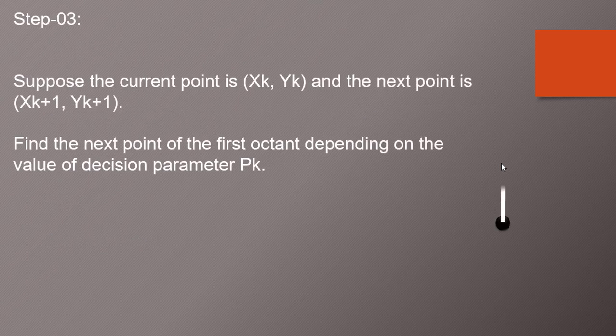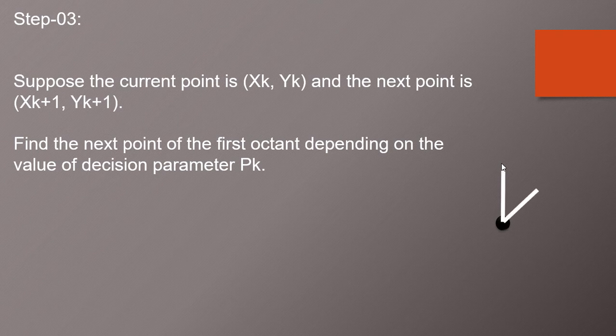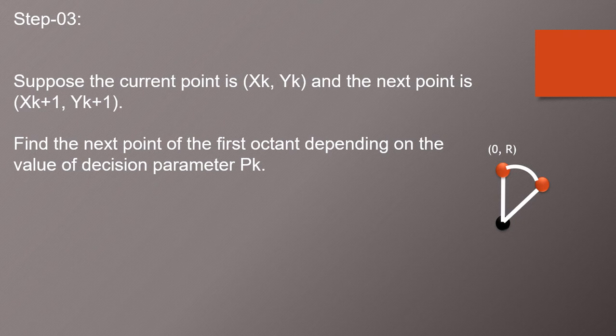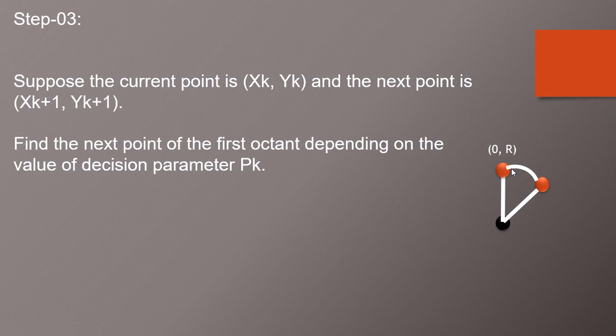Now the third step is right now we are having current value which is situated at this location 0 and R. That can be considered here as XK and YK. The next point from this XK and YK we are going to find out with XK plus 1 and YK plus 1. In this way we will find our whole points of this first octant only using our decision parameter PK value.